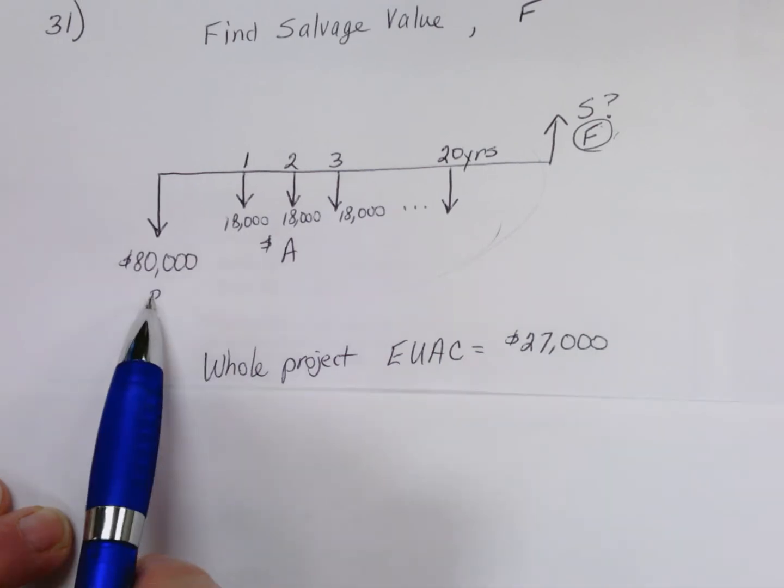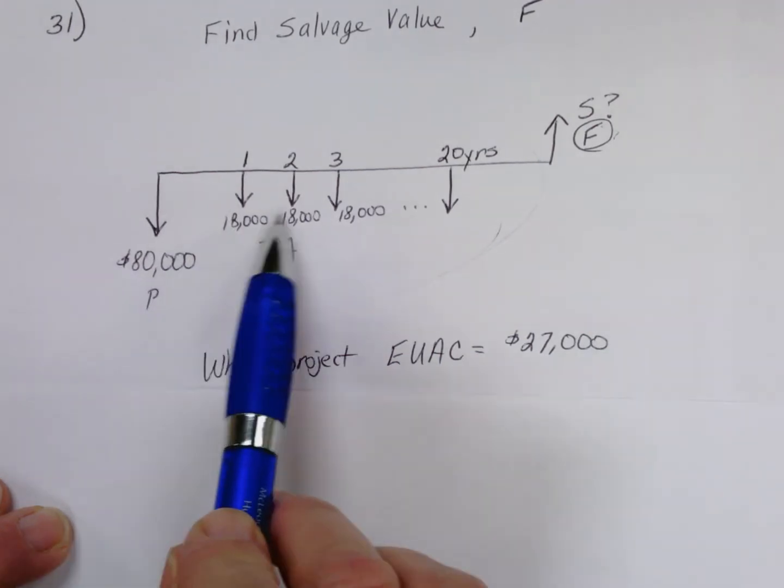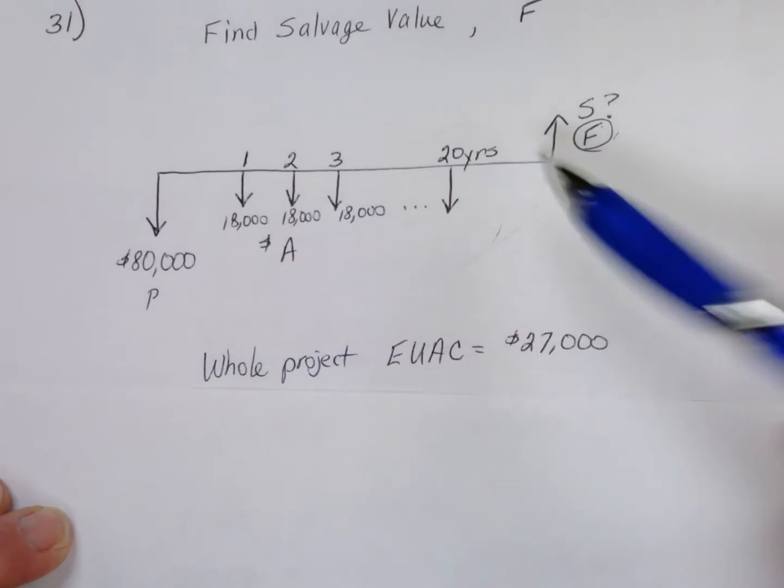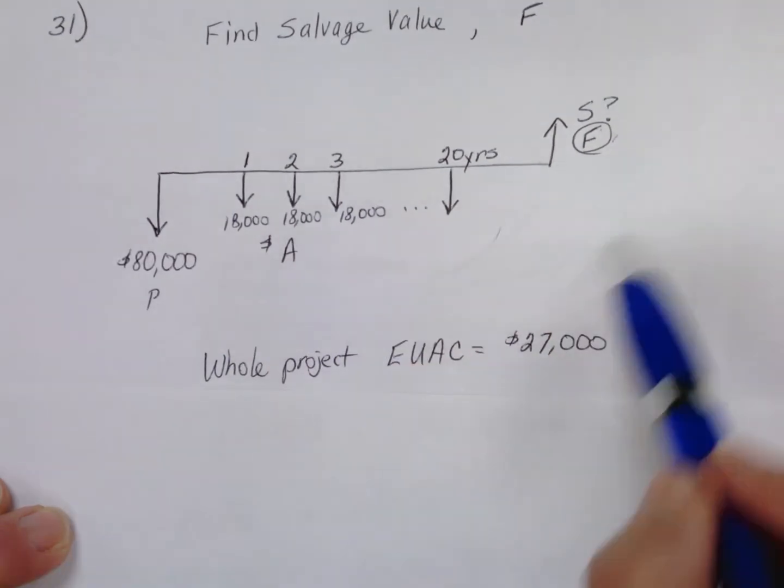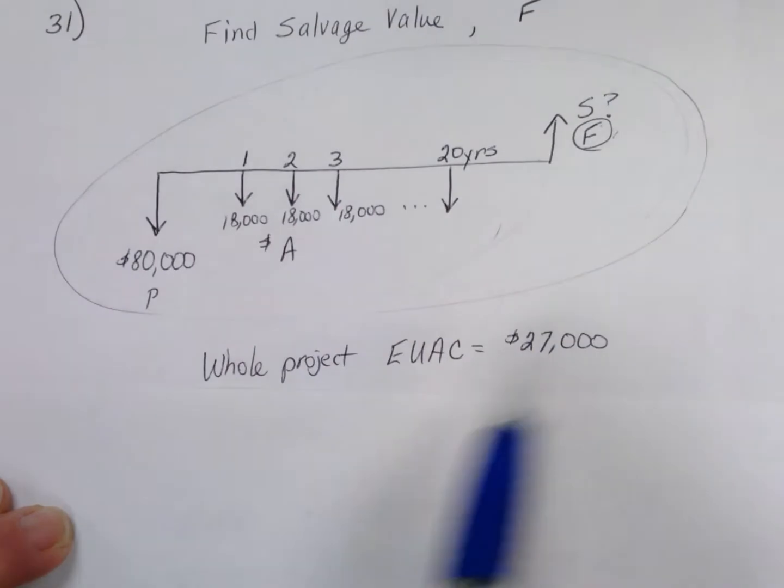We've got an initial big cash out, $18,000 cash out for 20 years, and what is it, how much do we have to sell that for at the end so that the average of all these cash flows averages together to be $27,000?